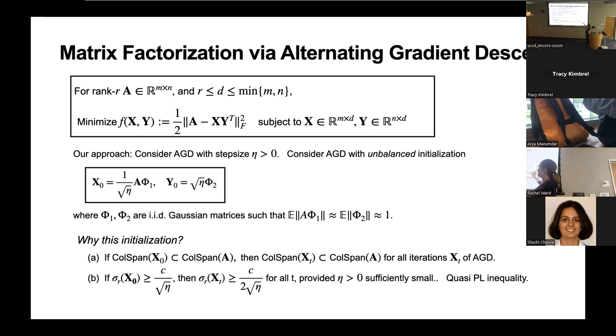So then this simplifies things very nicely. For one, the column span of the Xt factor remains the column span of A throughout the iterations by invariance of the alternating gradient descent updates. And so we can say that we know our gradient descent trajectory will lie in these very certain subspaces of the landscape, this column span subspace. And within that subspace, we can prove a PL inequality for a certain number of iterations. Basically, we can bound the rth singular value of Xt for a number of iterations and lower bound it by this 1 over the square root of eta, which is just enough to get a nice iteration complexity.